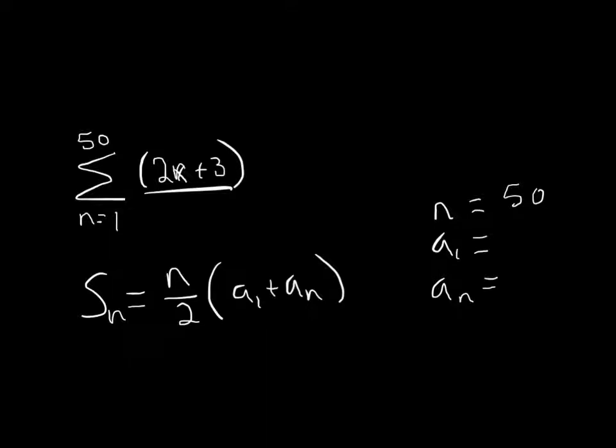I shouldn't have written x, I should have just written n. Same thing, doesn't matter, it's just a variable. But to find the first term I just replace that n with the lower limit. Since the lower limit is 1, I just replace n with 1 and I work it out. 2 times 1 is 2 plus 3 is 5.